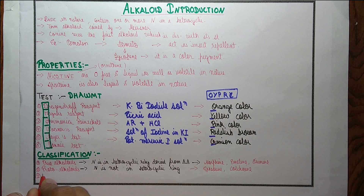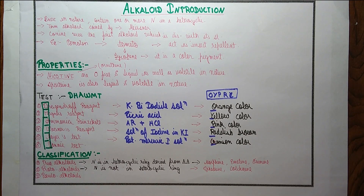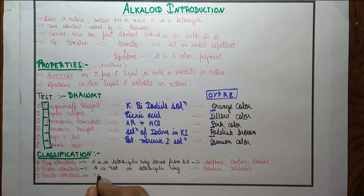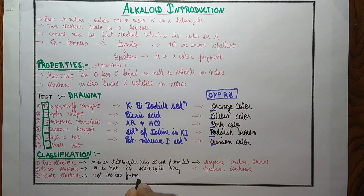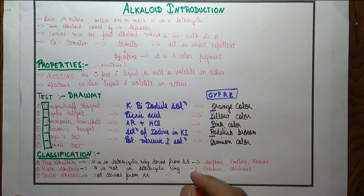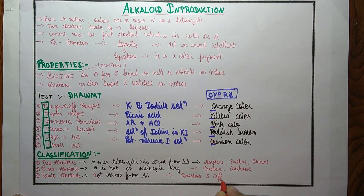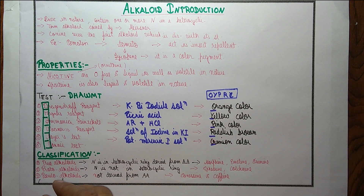The third class is pseudoalkaloids. Pseudoalkaloids are those which are not derived from amino acids. Examples include conine and caffeine. Pseudoalkaloids mainly include steroidal and terpenoid alkaloids.